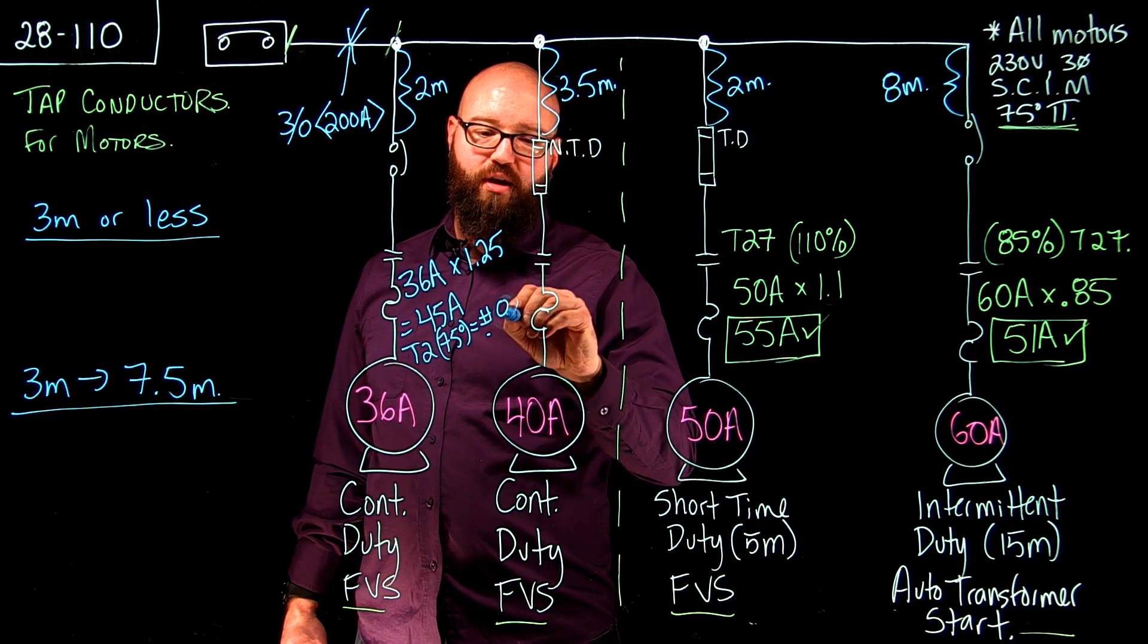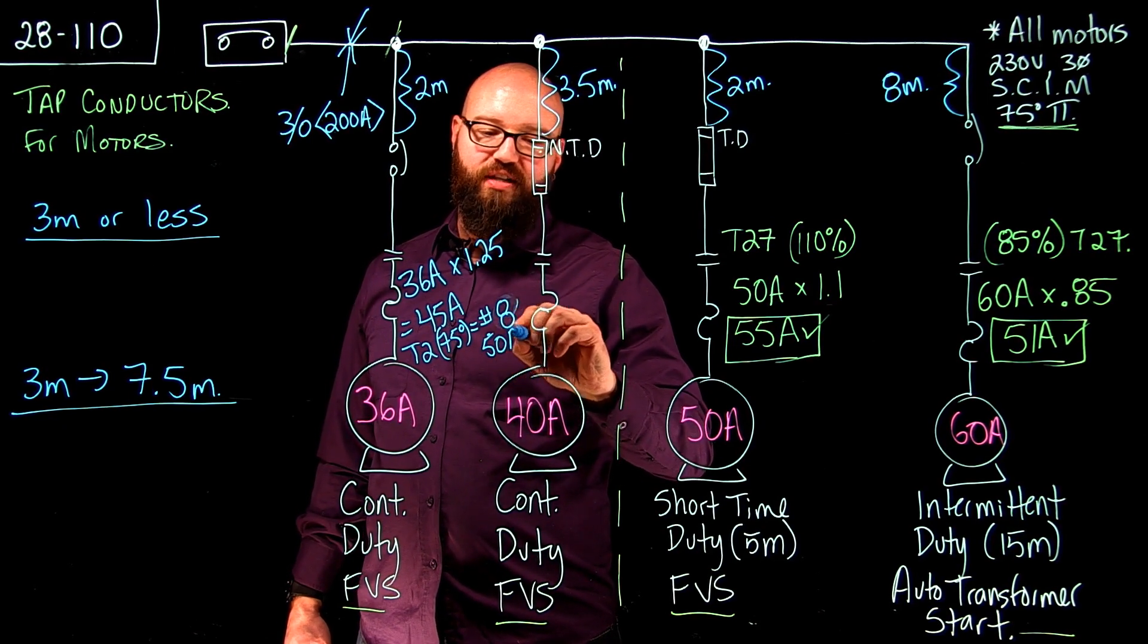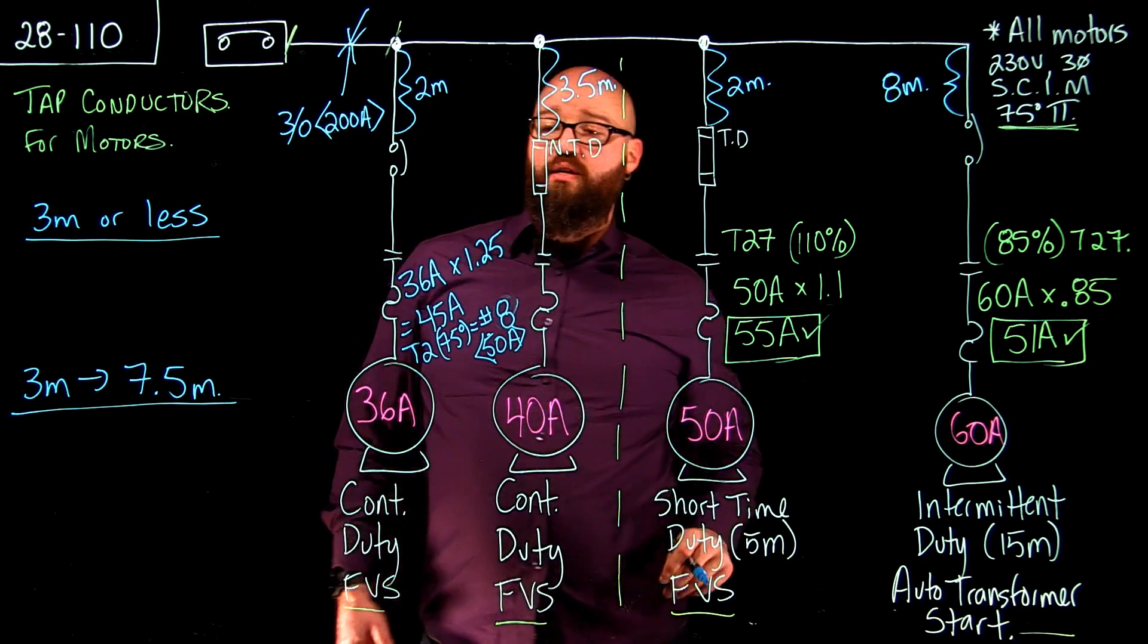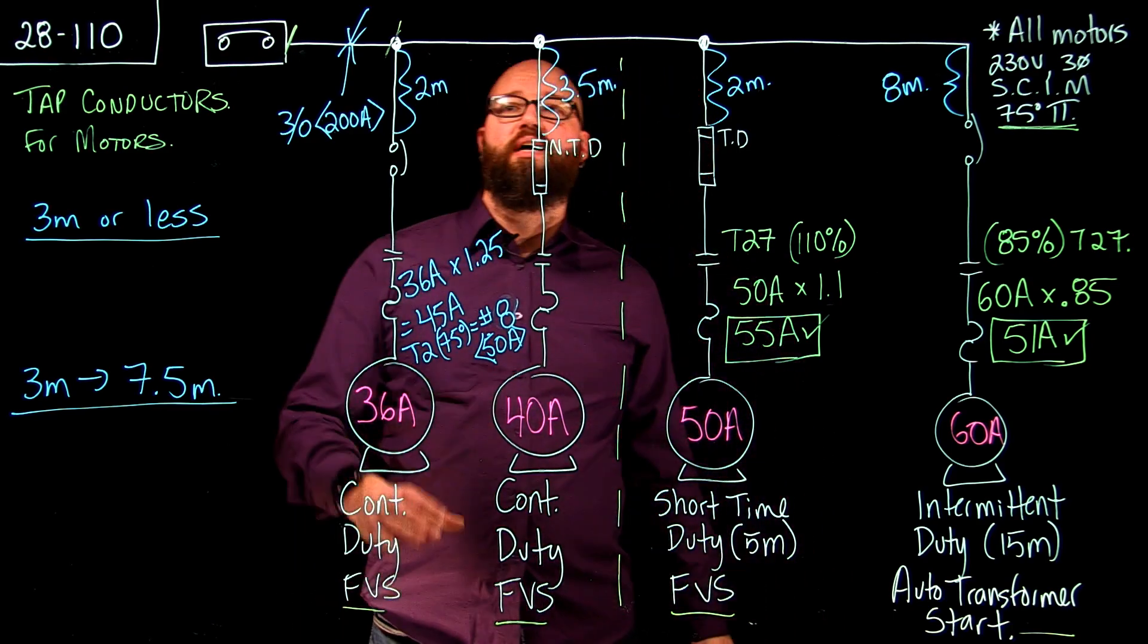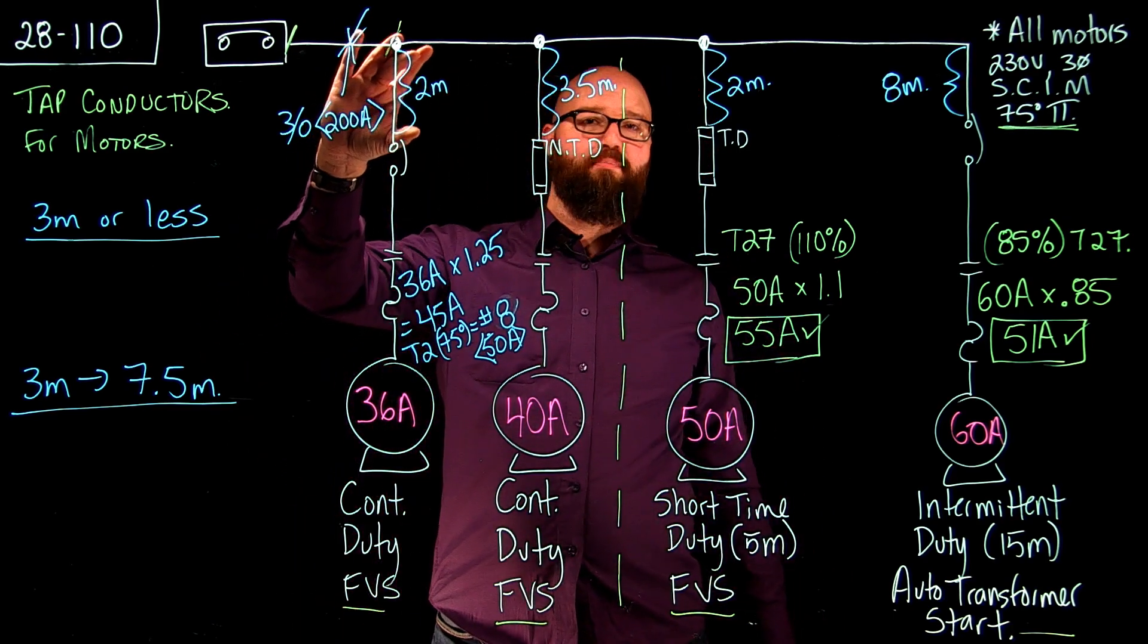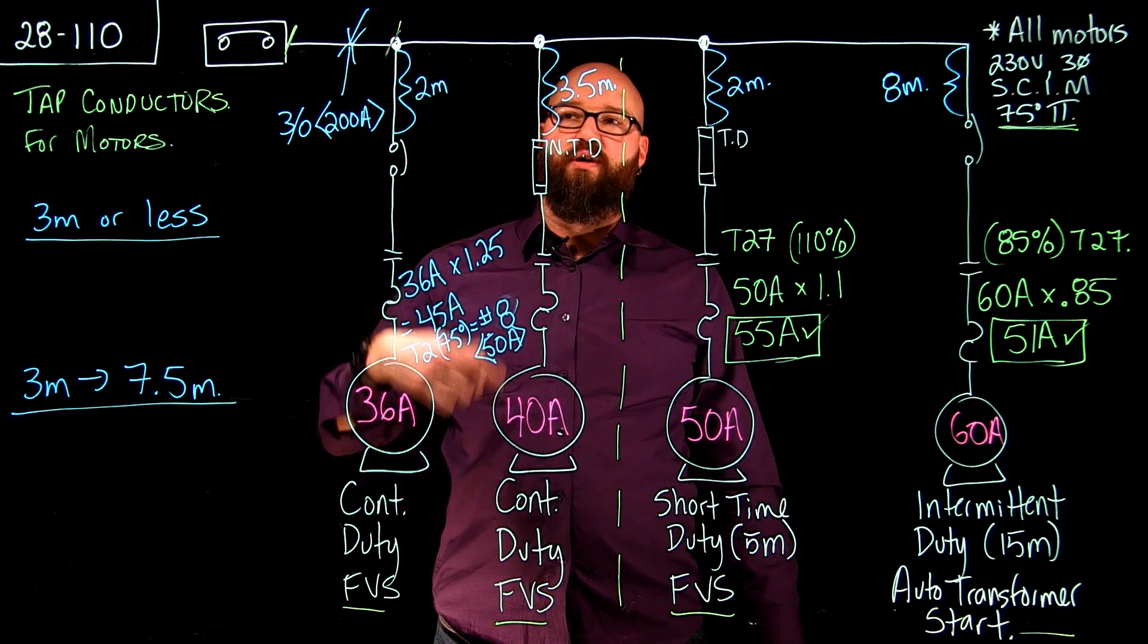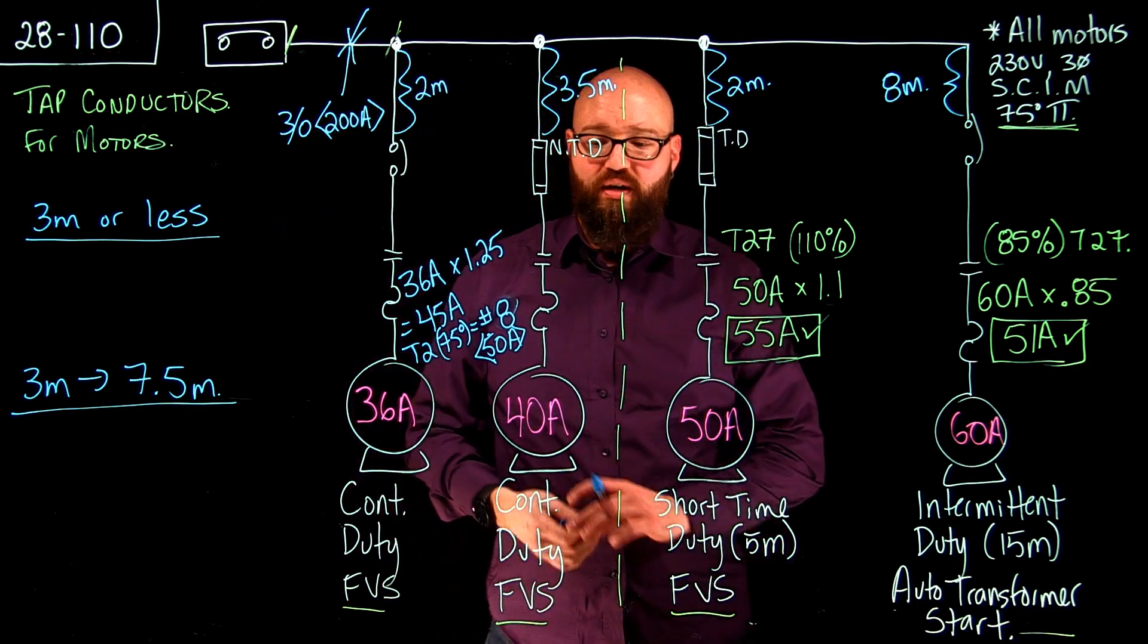We're going to go with a number 8 gauge that's good for 50 amps. So that's my branch circuit conductor and because I'm less than 2 meters on my tap I can also use a number 8 gauge for a tap conductor here as well.